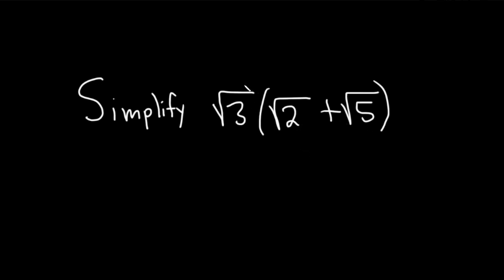So basically we're going to distribute. We're just going to multiply this times this, and then this times this. Everything is positive under the square root, so we can basically multiply the numbers under the square roots. So I'll go ahead and show the work.